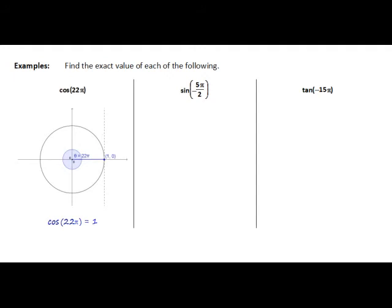Now thinking about the next example, sine of negative 5 pi on 2. The first thing we think about is we're measuring a negative angle, so we're going to travel clockwise from the positive x axis, counting in units of pi on 2 or 90 degrees. Starting here at the positive x axis, if I move clockwise by 90 degrees or pi on 2, I'm here. A further 90 degrees clockwise takes me to 2 pi on 2.